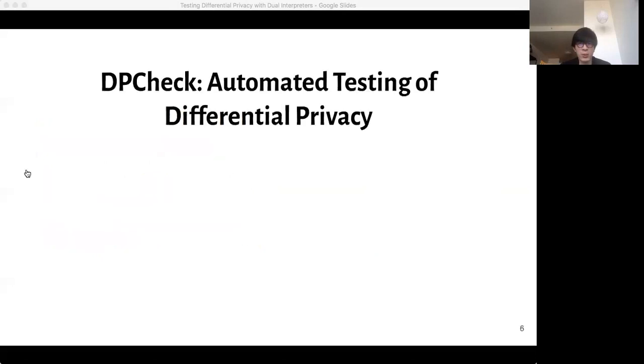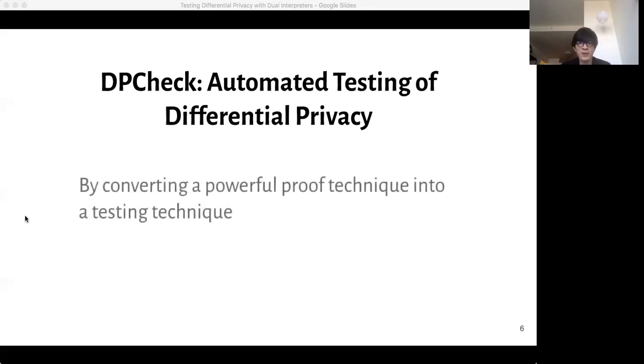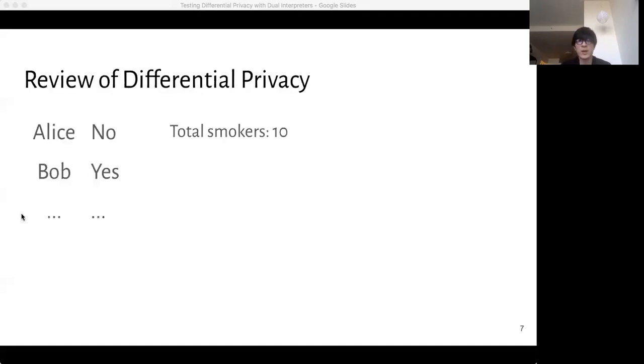So we introduce DPCheck, which is an automated testing framework for differential privacy that takes on a hybrid approach between proof search and statistical testing. We achieve this by looking at the structure of differential privacy proofs applied through a very commonly used proof technique. And we check if we can satisfy symbolic models reduced from the general proof structure together with concretely sampled execution traces from actually running the program. Before I tell you more about this hybrid approach, I need to do some review on differential privacy.